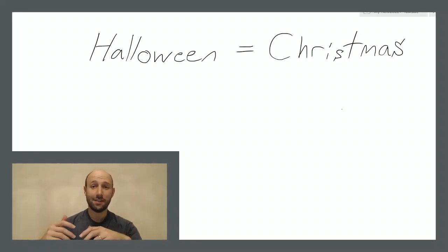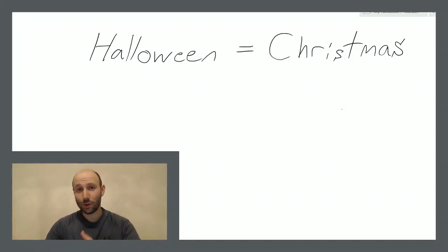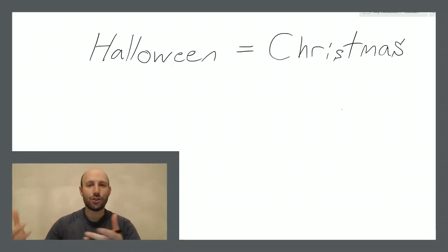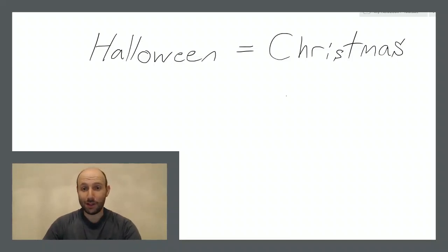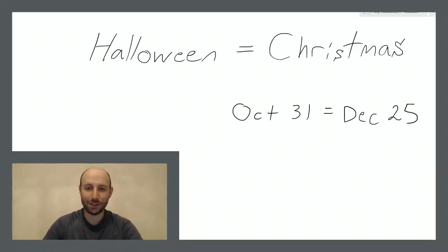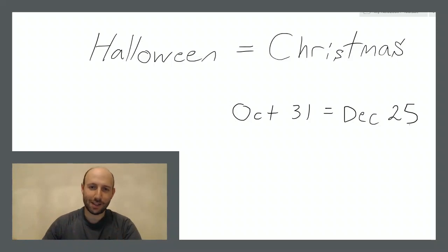Today I'm going to tell you a math joke that works its way every year around this time around mathematical circles: you can prove mathematically that Halloween equals Christmas. Of course it doesn't — they're completely different celebrations — but there's a joke that you can prove that it does. The thing actually being proven is that October 31st equals December 25th.